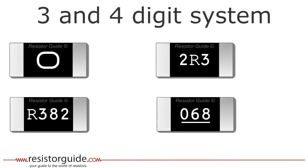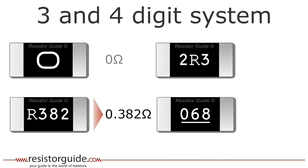Now we will solve four examples which are a bit different. The first one has only a zero and represents a so-called zero ohm resistor with no resistance. The next resistor has the letter R as the first digit. The R represents a decimal point, so this resistor has a value of 0.382 ohms.